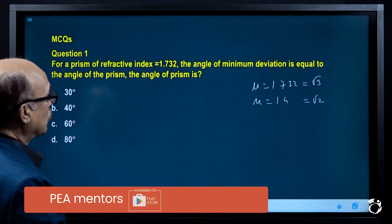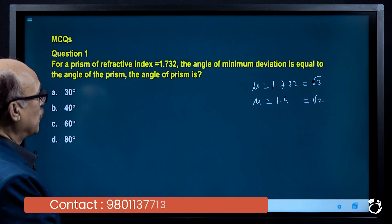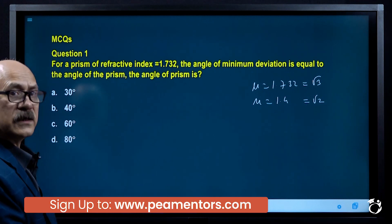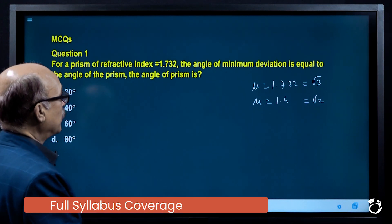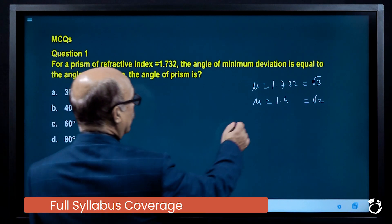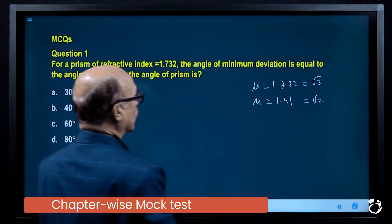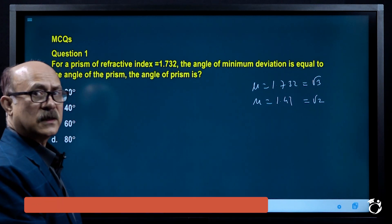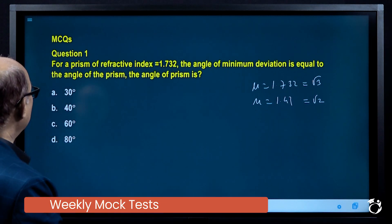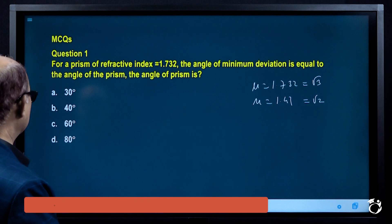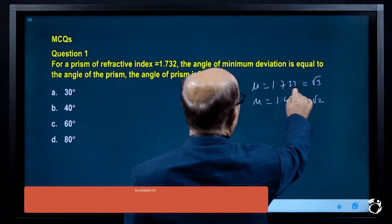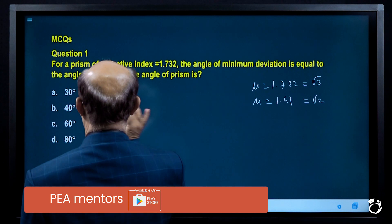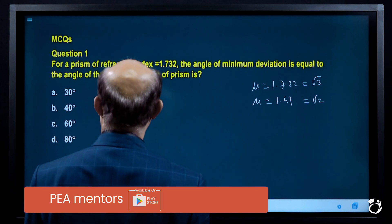So if μ = 1.732, which is root 3, the answer will be either 30 degrees or 60 degrees. And if μ = 1.41-something, which is root 2, the answer will be 45 degrees. So you can guess easily — is the answer 30 or 60? Let's work it out.